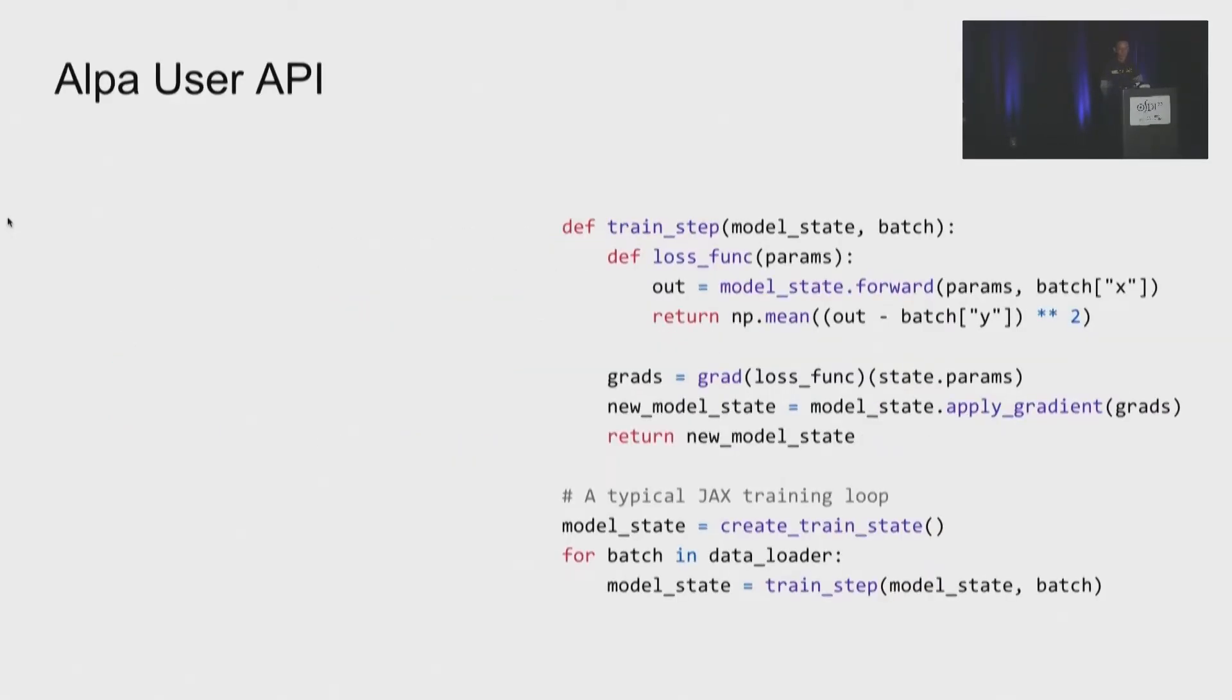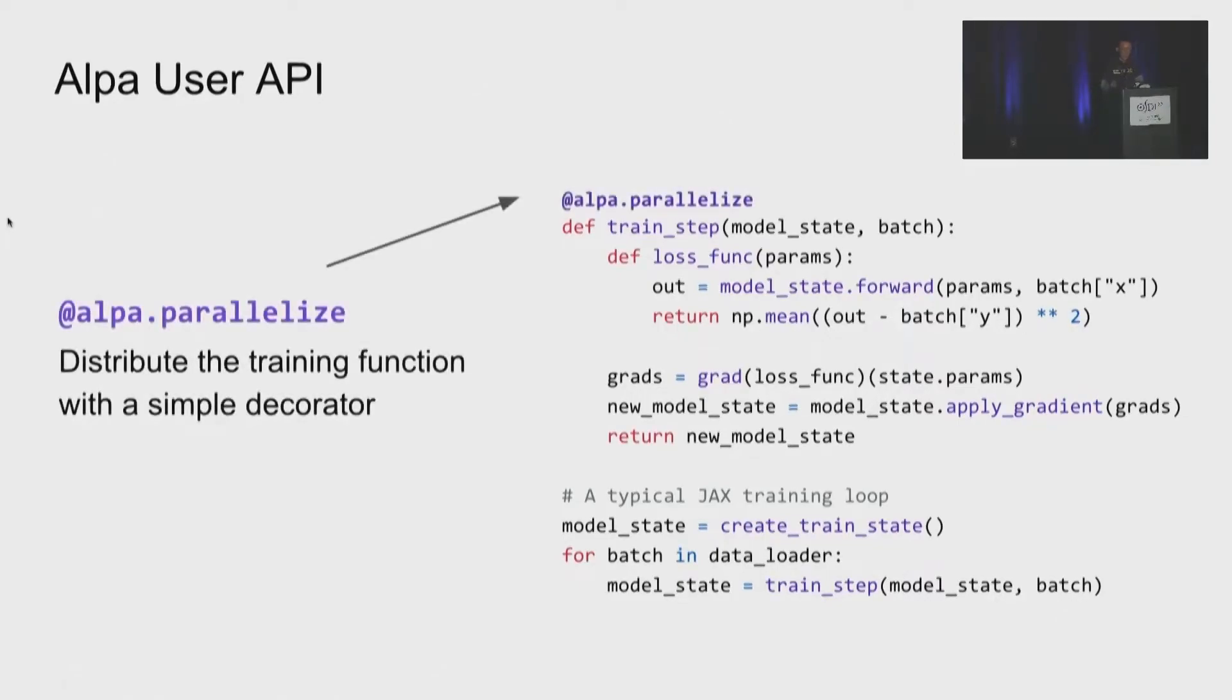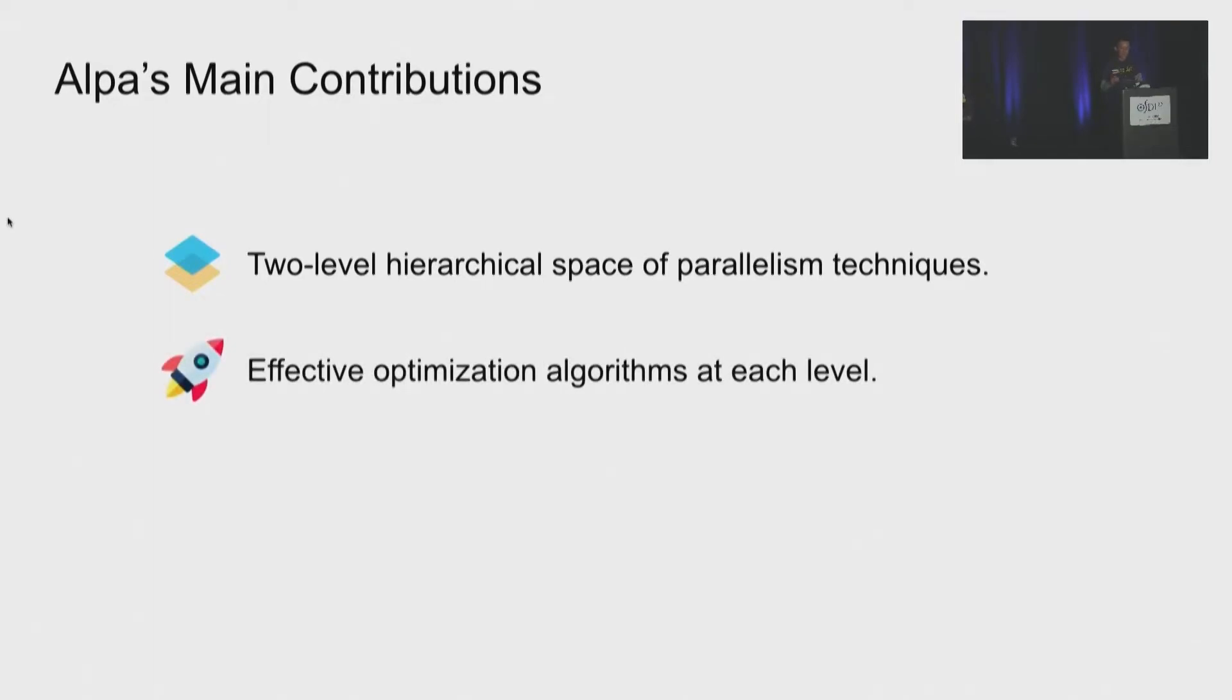Alpa has a very simple user API. Alpa provides a Python decorator @alpa.parallelize. You can put this decorator on top of your Python deep learning training function. When the function is being called for the first time, it triggers compilation. Then the function will be parallelized and run distributedly on your server. Under the hood, this simple API is made possible by several innovations of the Alpa project. To deal with the complicated search space of so many parallelization techniques, we organize the parallelism techniques as a two-level hierarchical space. And we then design optimization algorithms to derive effective parallelization plans at each level. And finally, we implement an efficient compiler to generate the plan and a high-performance runtime to execute the plan.